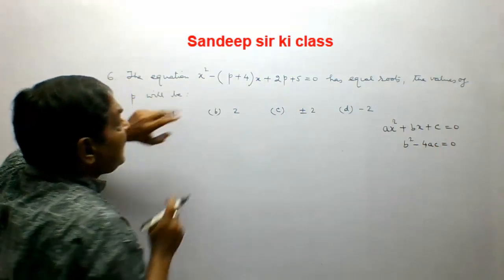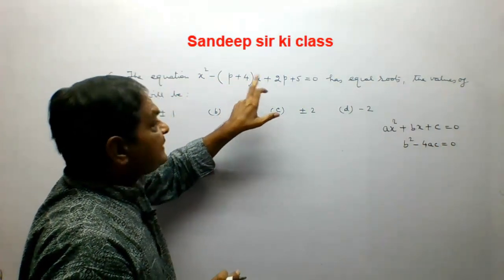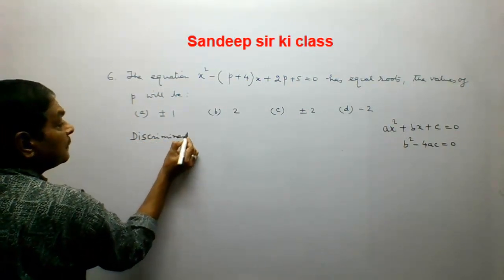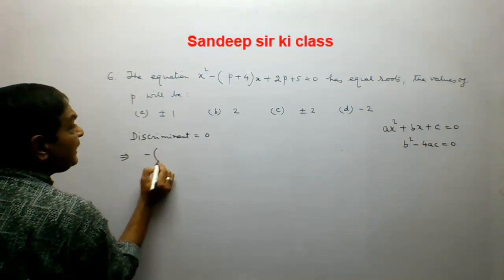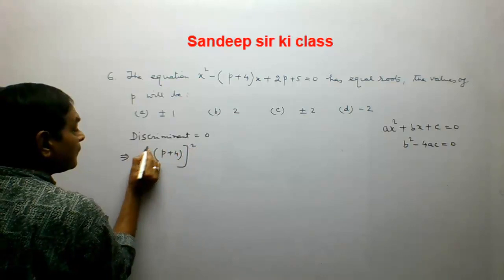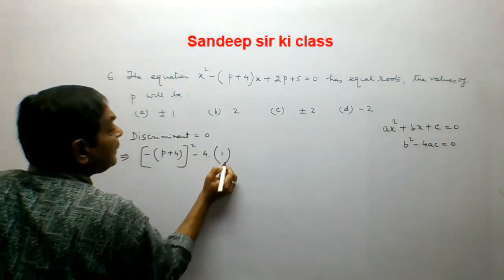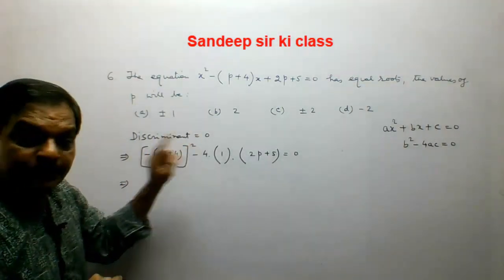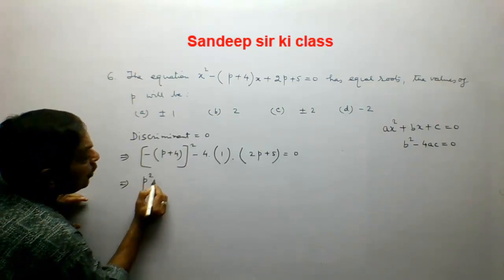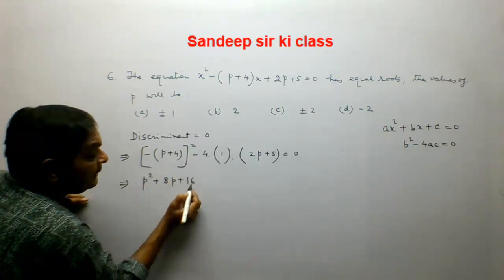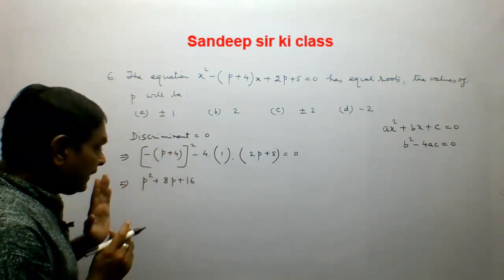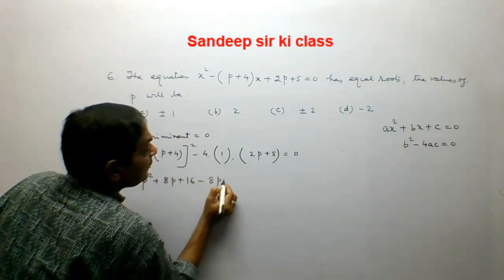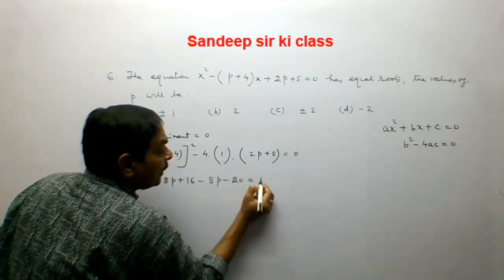Here a = 1, b = -(p+4), and c = 2p+5. Setting discriminant equal to zero: [-(p+4)]² - 4(1)(2p+5) = 0. Expanding: (p+4)² = p² + 8p + 16, and using a+b whole square formula. Then minus 4(2p) = -8p, minus 4(5) = -20, all equal to 0.